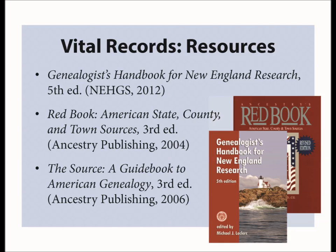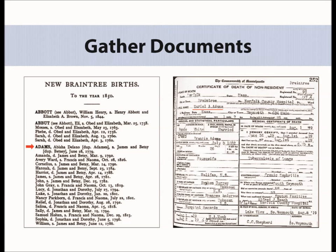Unfortunately there is no one-stop shop for vital records, as the location, availability, and accessibility can vary from state to state. To locate available records in New England, I would suggest the NEHGS Handbook for New England Research. For those looking for vital records outside of New England, look at The Source or the Red Book. Once you've located a potential vital record collection, gather all possible records for each generation — be sure to search for birth, marriage, and death records for the male and female in each generation, including second marriages. Use variant spellings when searching, as spelling in the 18th and 19th century was not as uniform as today and a vital record may have been transcribed incorrectly or spelled differently.